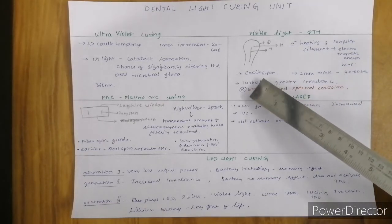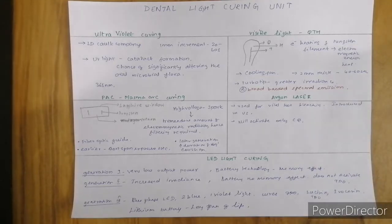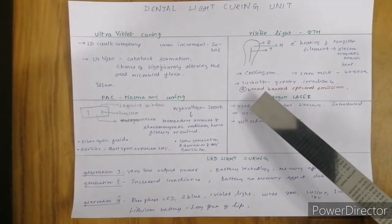For curing a 2mm thickness of increment, we require the quartz tungsten halogen light to be exposed for 40 to 60 seconds. We also have turbo tip mode in this light curing unit.